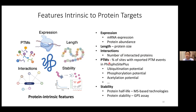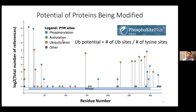For post-translational modification features, we estimated the fraction of sites with reported PTM events in the PhosphoSitePlus database, including phosphorylation, acetylation, and ubiquitination sites. For ubiquitination, we defined a feature termed ubiquitination potential, estimated as the fraction of lysine sites with reported ubiquitination events. Similarly, we computed phosphorylation potential, acetylation potential, and other PTM-associated features.